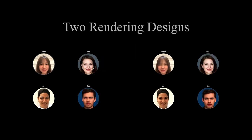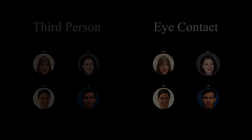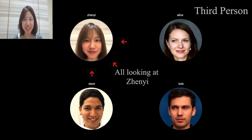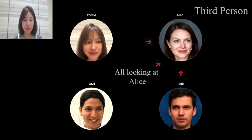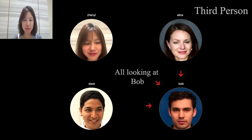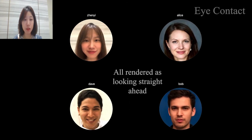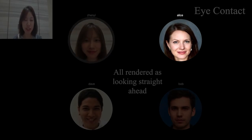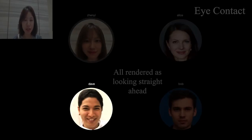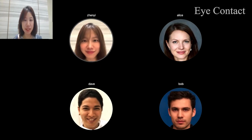We further design two variants in Gaze Chat's eye contact rendering: third-person and eye contact perspective. In the third-person perspective design, Gaze Chat treats all gaze information the same so that the final presented gaze angle is calculated according to the source viewer placement and destination viewer placement. Regarding eye contact rendering, when a user gazes at a viewer, Gaze Chat will render this user's profile as looking straight ahead, so the viewer feels as though this user is looking into his or her eyes.